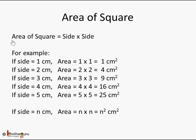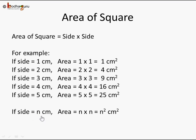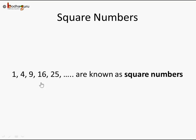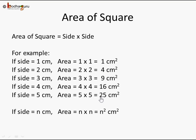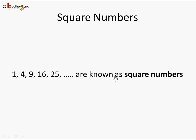The area of a square — we know the formula is side into side. So if a square has a side of 1 centimeter, its area would be 1 into 1, that is 1 square centimeter. If it's 2 centimeters, it's going to be 2 into 2, that is 4 square centimeters. If the side is 5 centimeters, the area would be 5 into 5, that is 25 square centimeters. Or, put generically, if there is a square with n centimeters as the side, its area would be n into n, called n squared. So 1, 4, 9, 16, 25 — all these are known as square numbers.